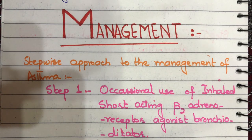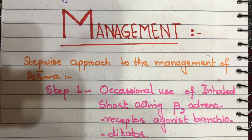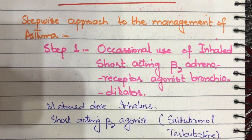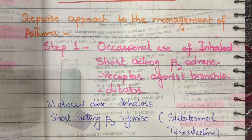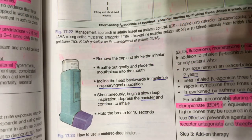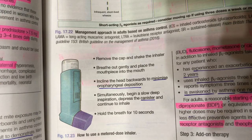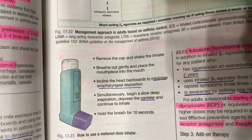Moving on to the management of asthma in stable or mild disease, we follow a stepwise approach consisting of 5 steps. Step 1 is occasional use of inhaled short-acting beta-2 adrenoceptor agonist bronchodilators using metered-dose inhalers. Short-acting beta-2 agonists include salbutamol and terbutaline — these two names must be remembered. To use a metered-dose inhaler: remove the cap and shake the inhaler, breathe out gently and place the mouthpiece to the mouth, incline the head backwards to minimize oropharyngeal deposition, simultaneously begin a slow deep inspiration, depress the canister and continue to inhale, then hold the breath for 10 seconds.